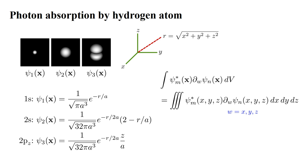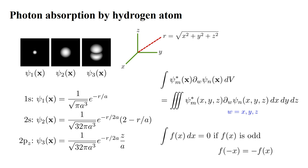The absorption and emission coefficients contain a factor with terms having the form of an integral over all space of the conjugate of the n-th atomic wavefunction, times the derivative with respect to x, y, or z of the m-th wavefunction. Without computing the derivative and doing the integration, we can make the following general statement: the integral over all values of x of a function f(x) will be zero if f(x) is an odd function, meaning f(−x) = −f(x). The s orbitals are functions of r alone, and r is an even function of x, y, and z — so the s orbitals are even functions of x, y, and z.